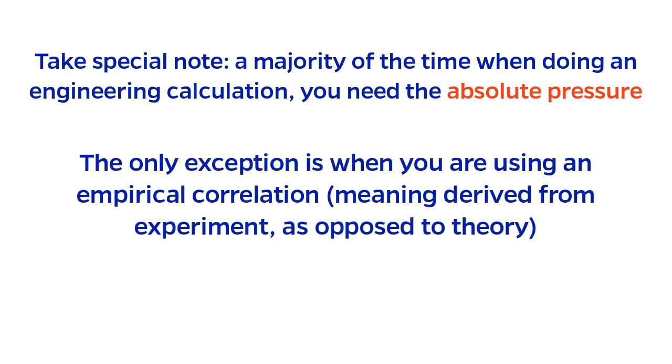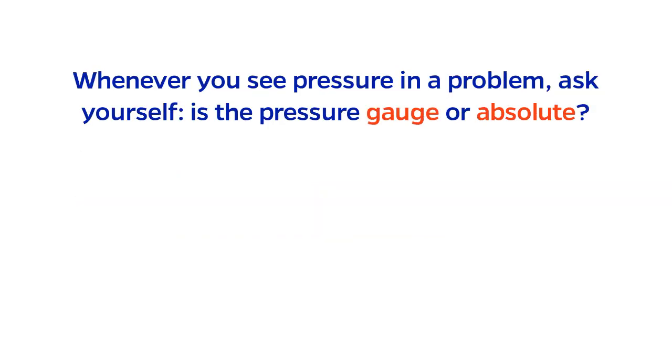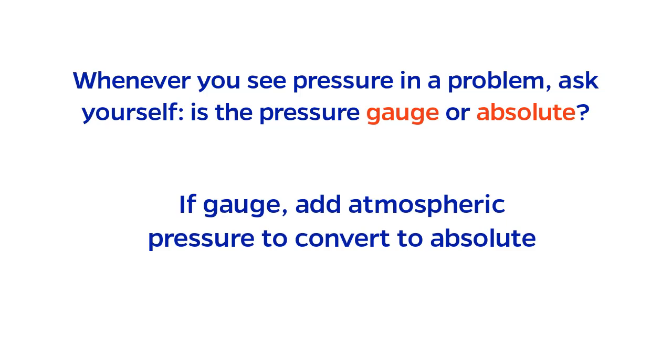The only time you wouldn't is if you're using an empirical correlation, which means coming from an experiment as opposed to theory, that is based on gauge pressure. So, whenever you see pressure in a problem, get in the habit of asking yourself whether this is gauge pressure or absolute pressure, and then add atmospheric pressure if it is appropriate.